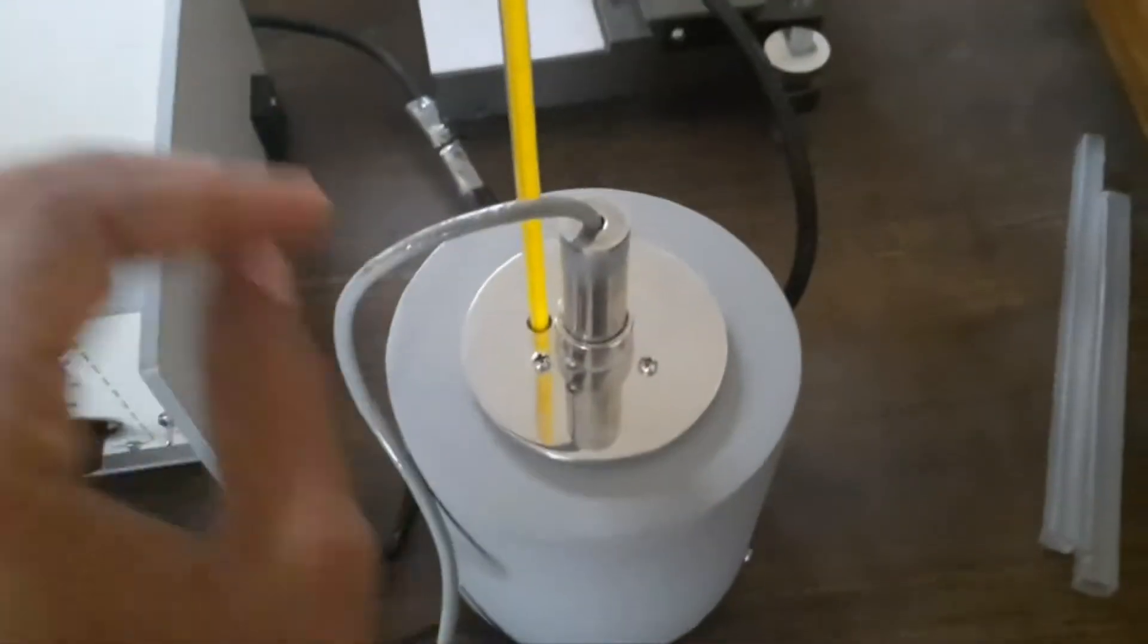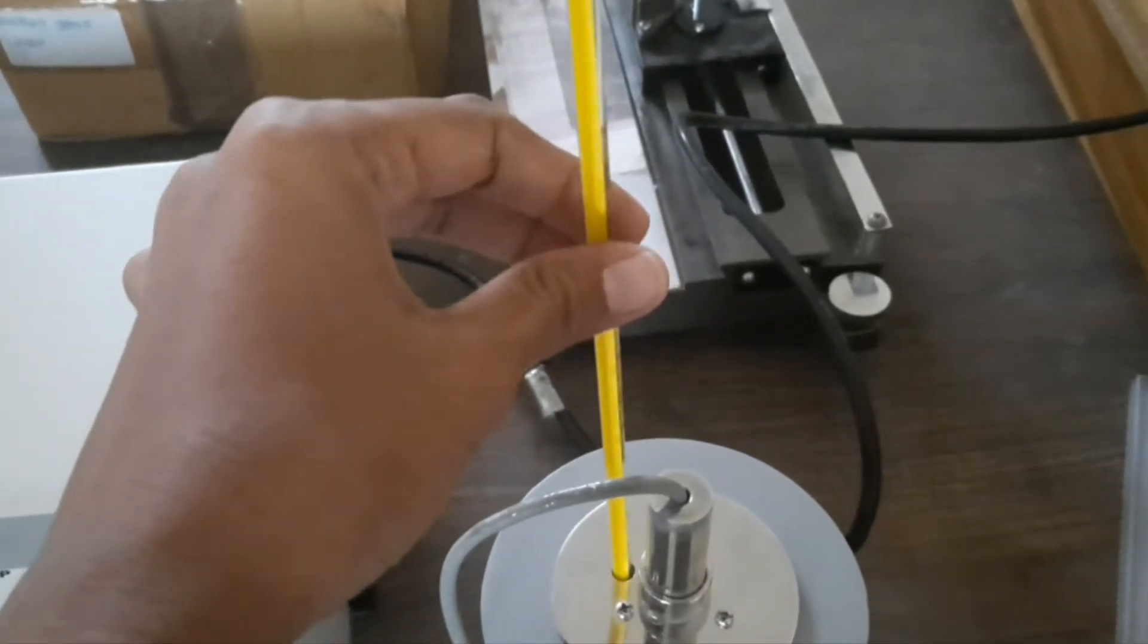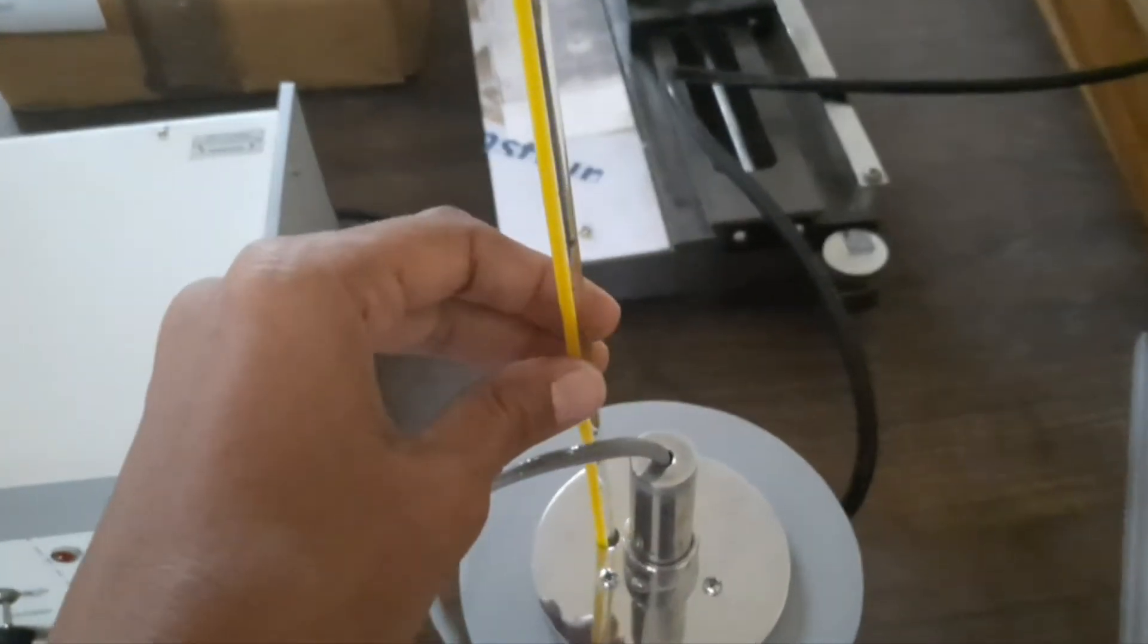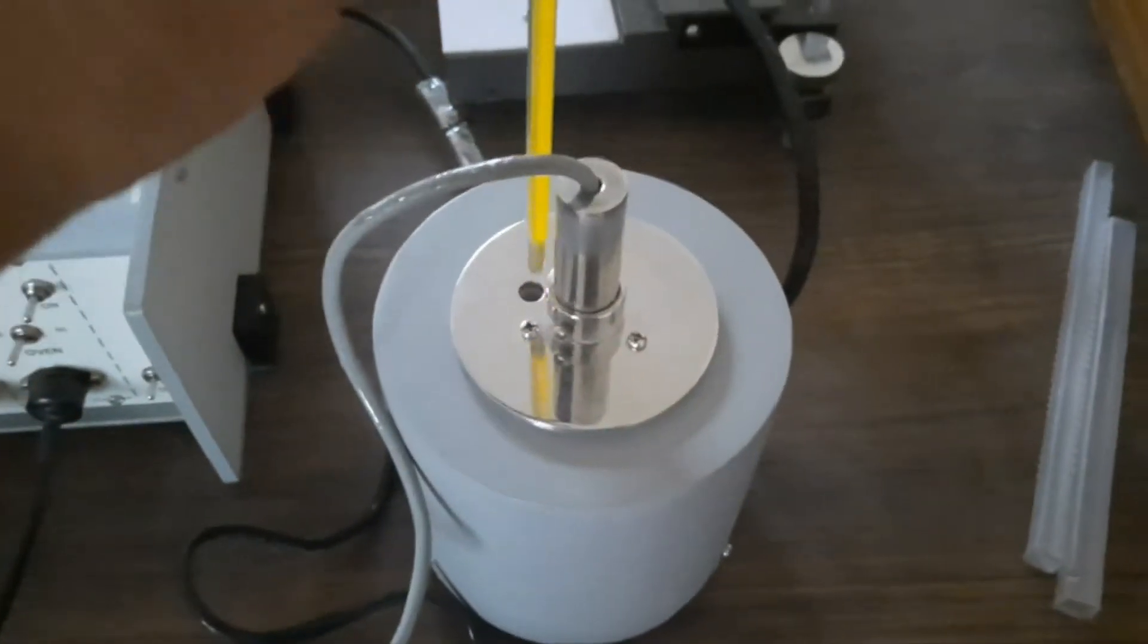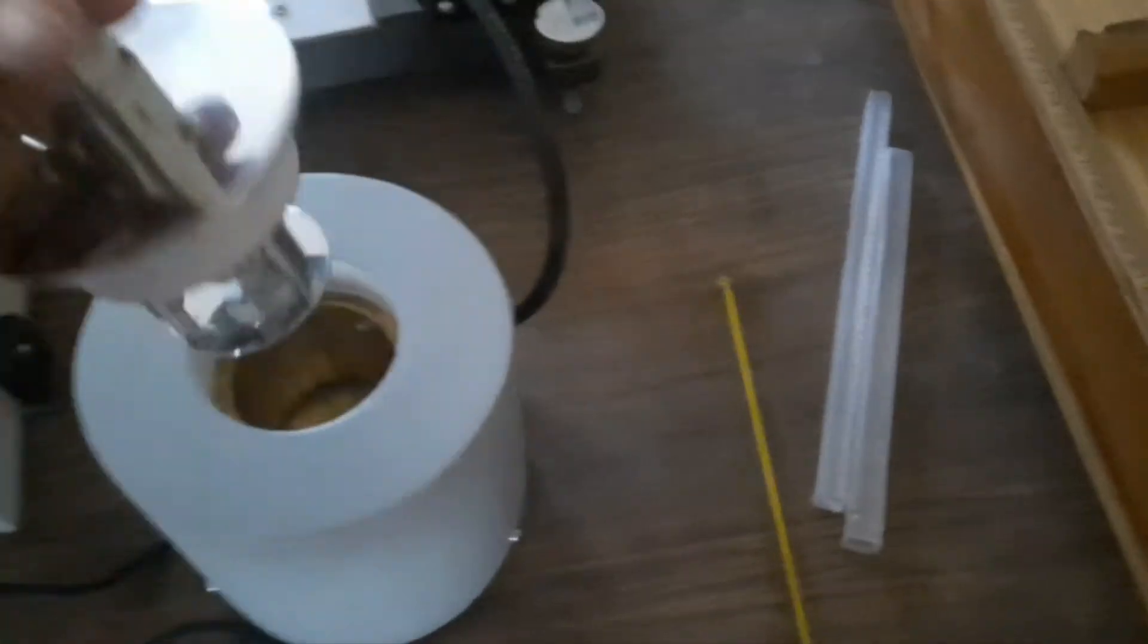Here this is the 4-probe setup, and here is the oven. This is the thermometer we have to fix to measure the temperature. It is having the range of 0 to 200 degree Celsius.